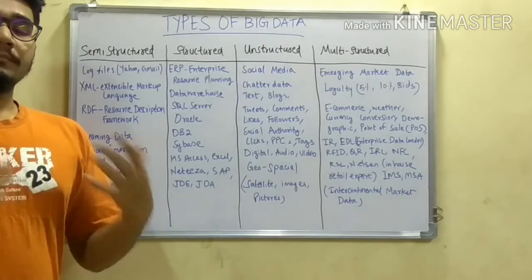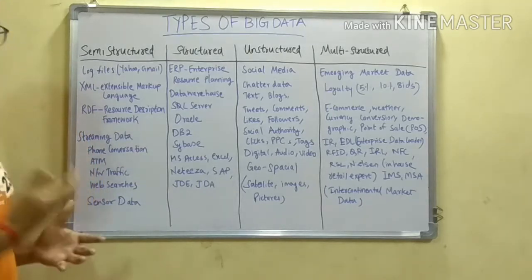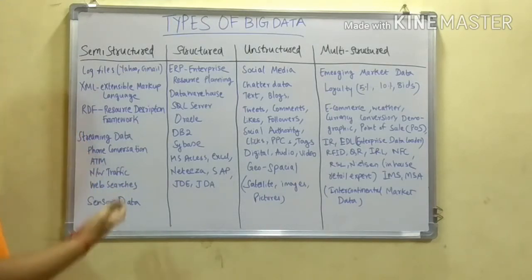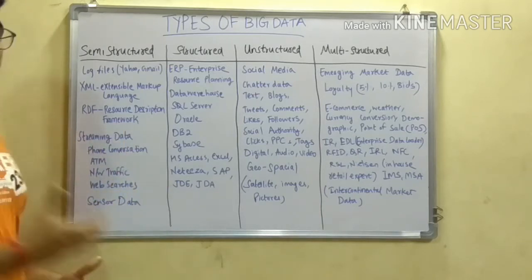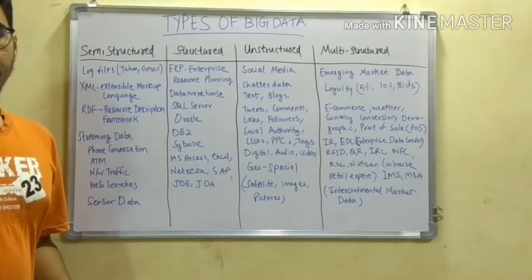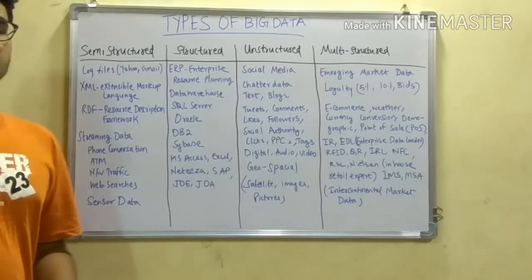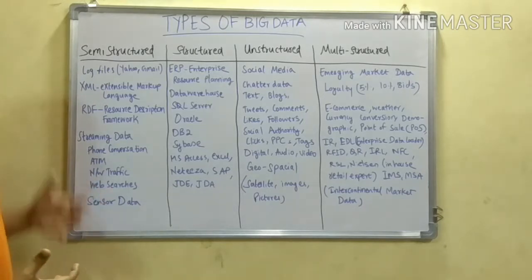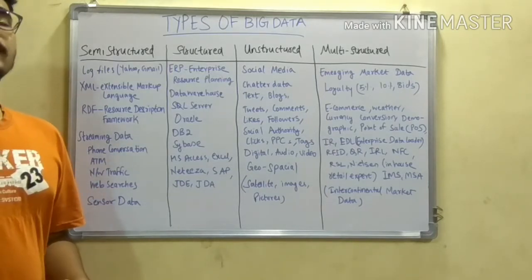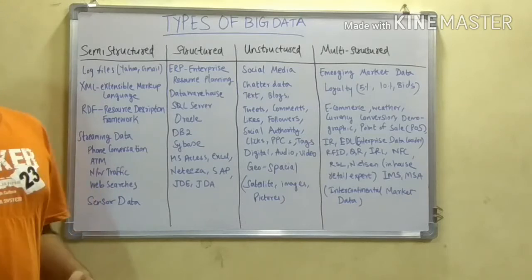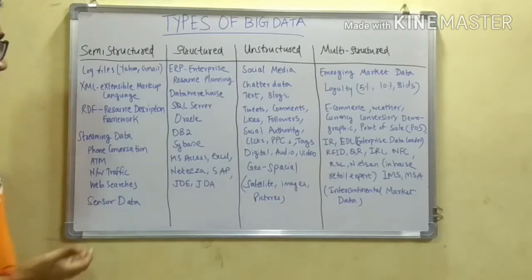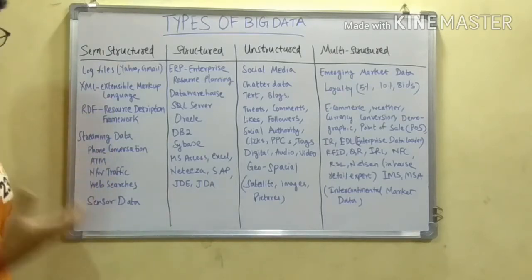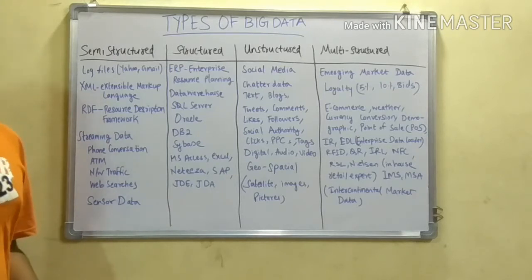Next is streaming data — data that we stream or generate throughout the day from the internet or phone calls. Phone conversations, calls, and missed calls are all calculated under phone conversation data. Next is ATM data — the ATM transactions you do day by day from banking. Next is network traffic — traffic captured from Twitter streaming or other streaming done using Apache Flume. All those network traffics are considered under semi-structured data.